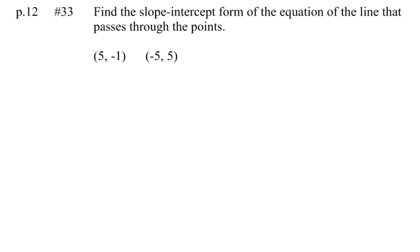Page 12, problem number 23 reads, find the slope-intercept form of the equation of the line that passes through these two points, 5, negative 1, and negative 5, 5.